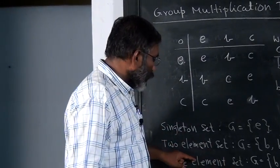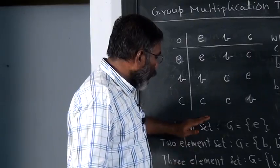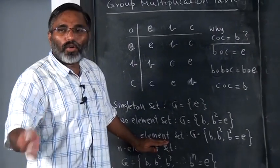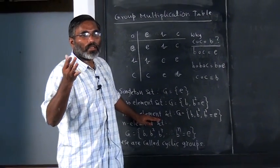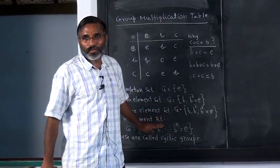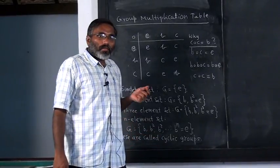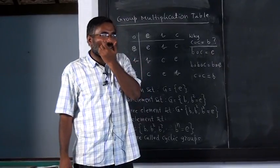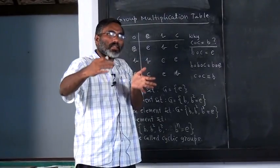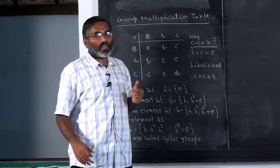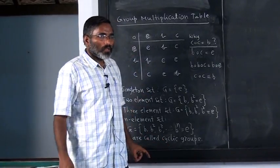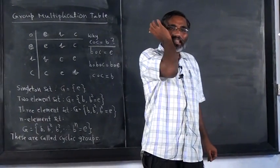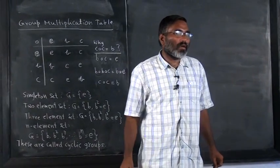But up to three elements, we have seen that the only group possible with one, two, and three elements are cyclic groups. From four elements onwards, you can also have additional conditions — it is not only these conditions, but there can be additional sets of conditions for which a four-element set becomes a group. So non-cyclic groups are possible for sets having more than four elements.